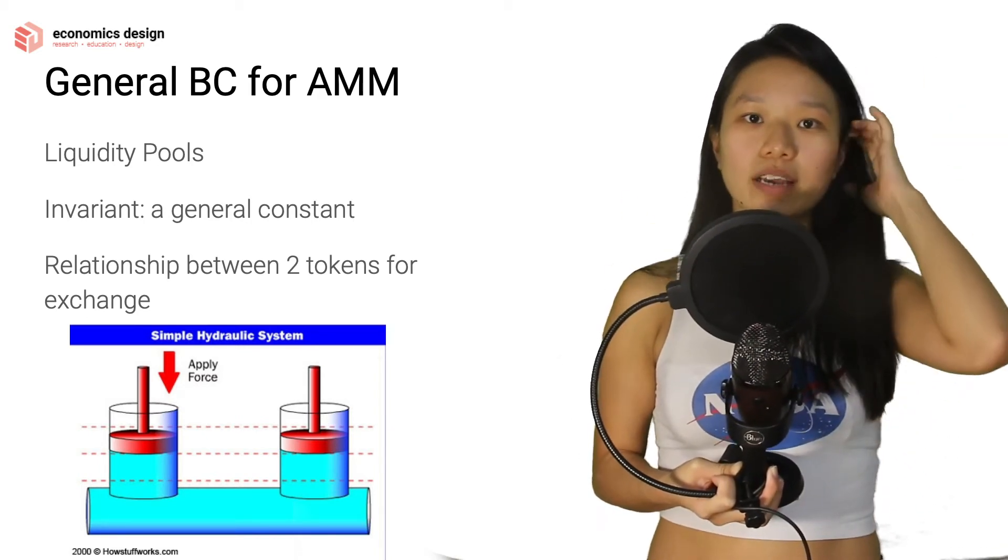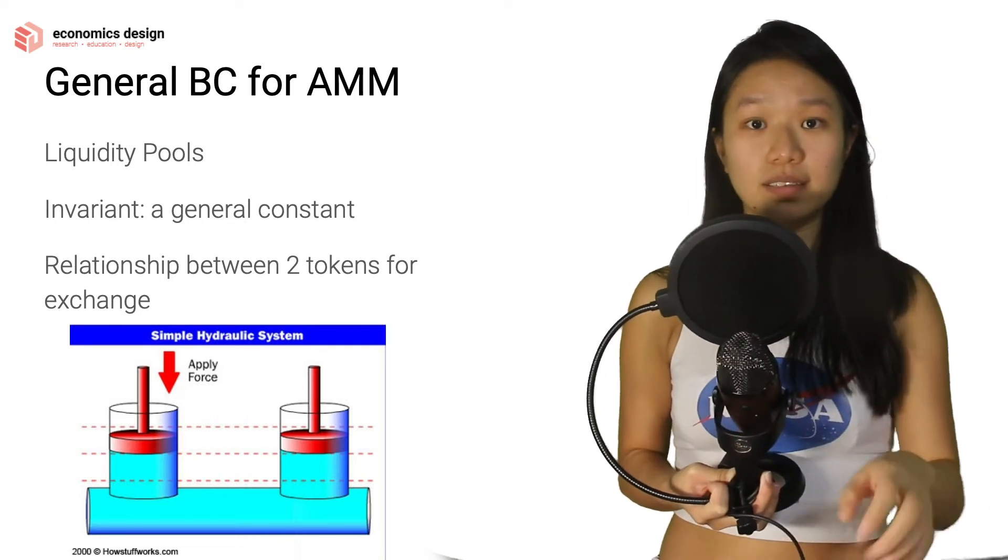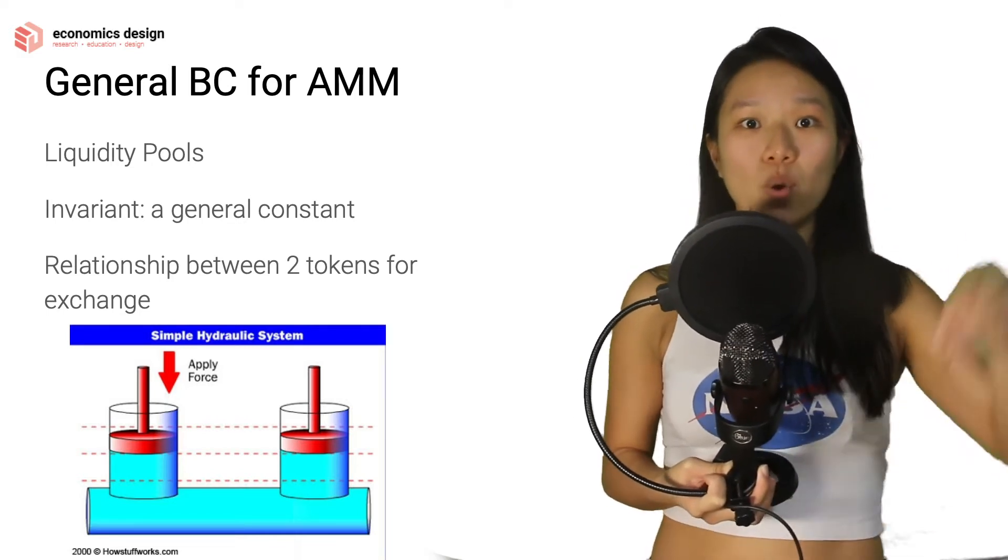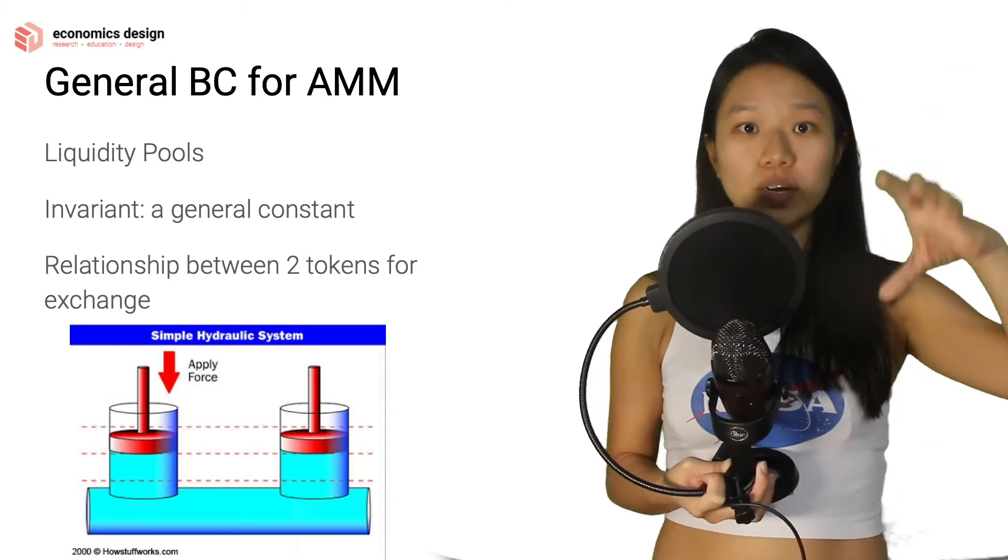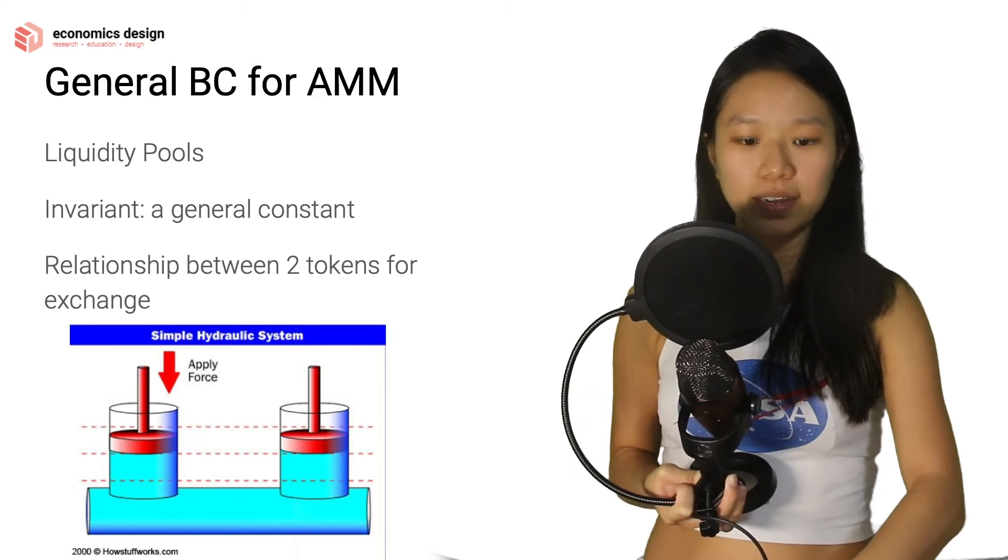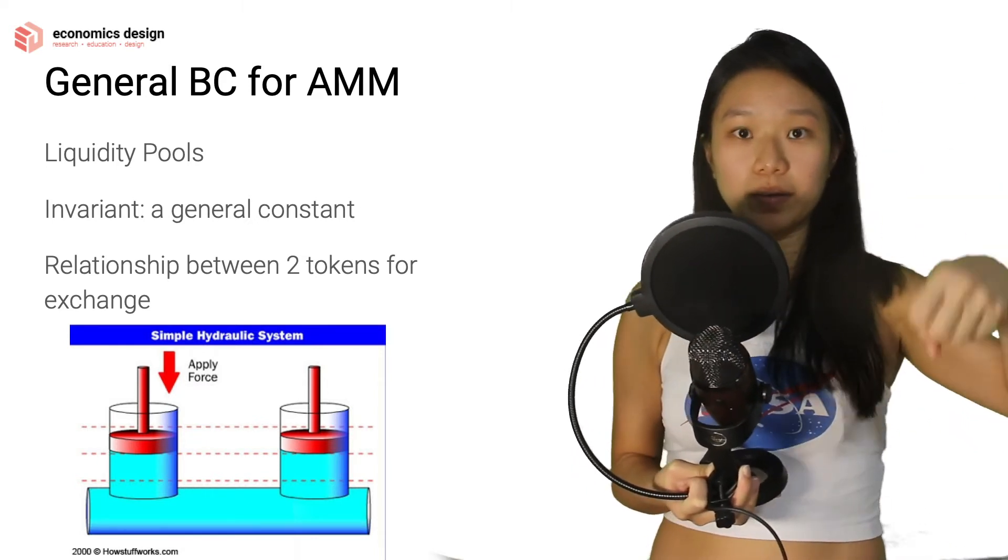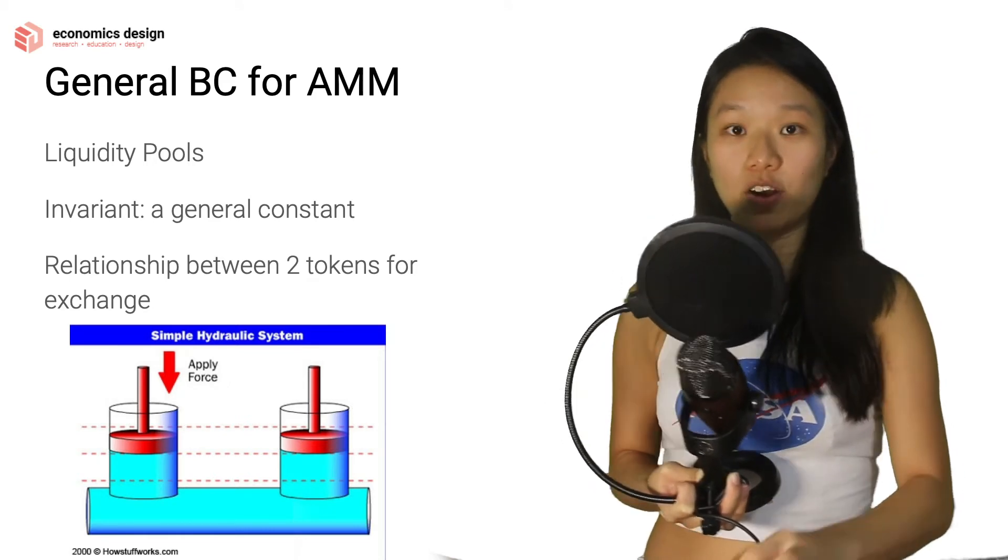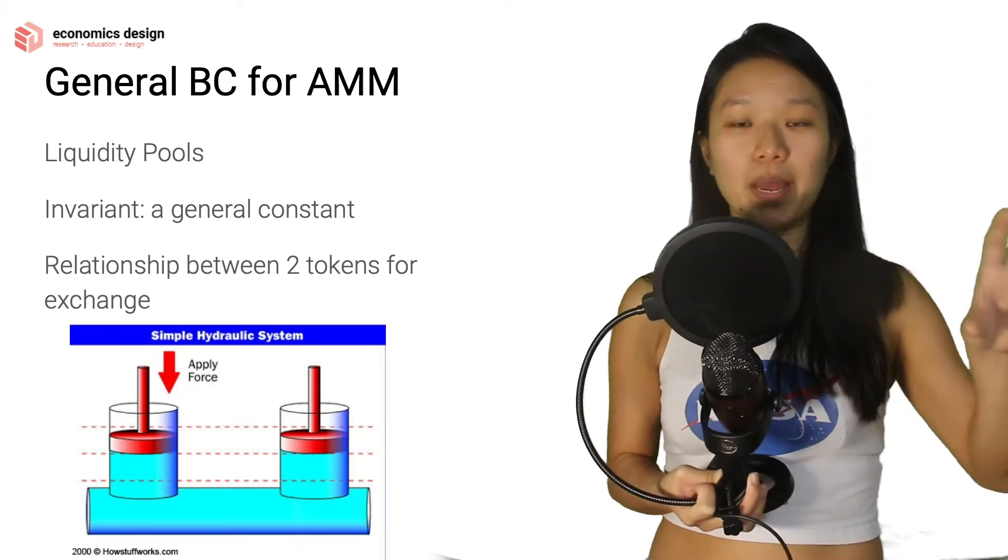If you think about it in the context of decentralized exchanges, in the context of AMMs, it's basically something like that. When you are withdrawing tokens or when you're adding tokens in, it changes this left side hydraulic opening and that will result in the right side hydraulic opening to increase or decrease depending on your action.